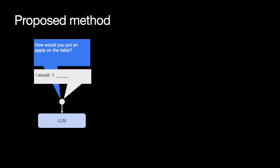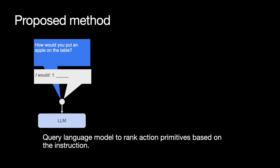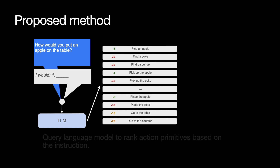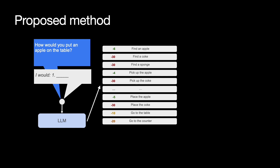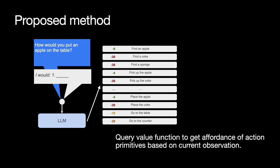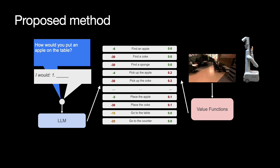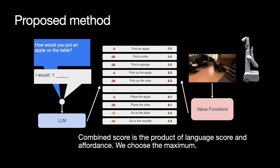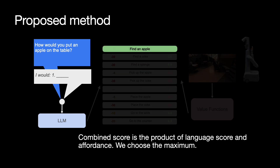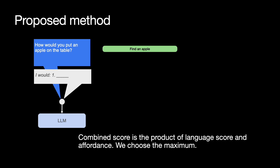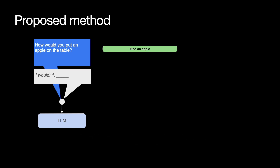The method works as follows. We first prompt the language model with the appropriate input, where we include the instruction and the answer that starts with 'I would first.' Then we ask the large language model to score skills available to the robot. Once the skills are scored, we ask the value functions to score them according to their feasibility in the current scene, given the agent's embodiment. The maximum combination of these two scores is used as the response, resulting in the robot executing the selected skill.